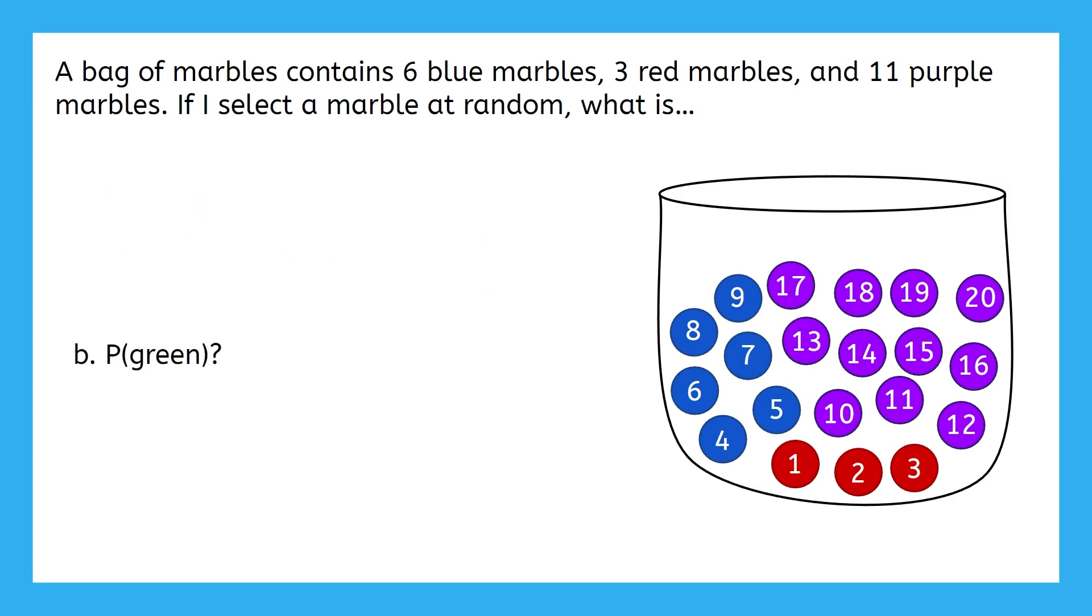How about part B? What is P of green, or the probability of selecting a green marble? Well, since we're still dealing with this same scenario of pulling marbles from this bag, there are still 20 total possible outcomes. Out of those 20 total possible outcomes, how many of them meet the criteria of the marble being green? I know, this really isn't a typo, I promise. There are zero green marbles in this bag, and that's okay. That just means that the probability of selecting a green marble is zero out of 20, or zero, which makes sense. If I pull a marble from this bag, it will definitely not be green.